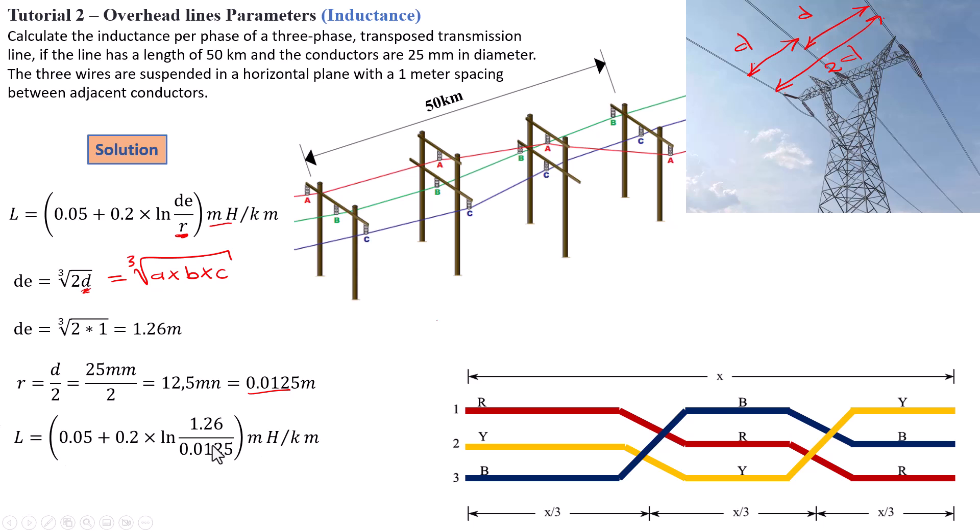That will basically give you the following equation here where you can calculate your inductance per kilometer. So this gives us a value of inductance of 0.973 millihenry per kilometer. So now, based on what's given to us here, 1 meter spacing between A, B, and C and a 25 millimeter conductor's diameter, we now found an inductance of L equals 0.973 millihenry per kilometer.